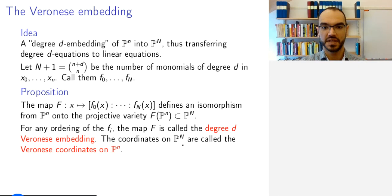The coordinates on P^N restricted to the image of P^n are called the Veronese coordinates on P^n. The embedding and coordinates are named for Giuseppe Veronese, who was active around the end of the 19th, beginning of the 20th century.